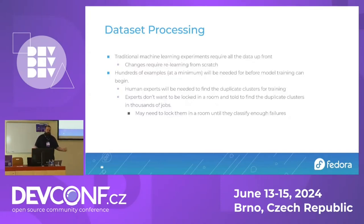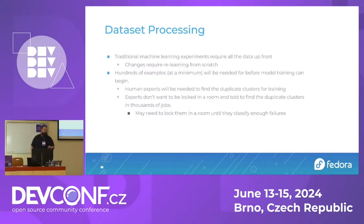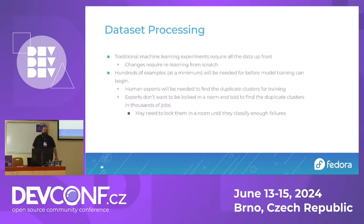We'd need at least hundreds of examples before a model can realistically start learning. In order to get that, we need human experts. And I have it on good authority — human experts don't like being locked in a room and told, go over 3,000 failures and find me the duplicates. I don't have any peer-reviewed paper to prove that, but I have it on good authority that they don't like that.